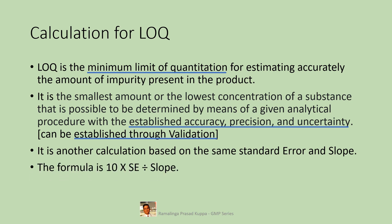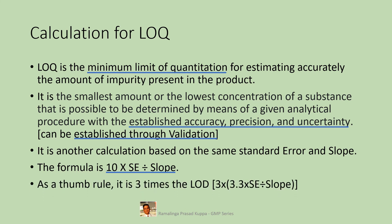The LOQ formula is 10 multiplied by the standard error divided by the slope — a similar extrapolated calculation to LOD. As a thumb rule, LOQ is 3 times the LOD. So if you represent LOQ with reference to LOD, LOQ = 3 × LOD. In the formula, 10 can be replaced with 3 × 3.3, multiplied by standard error divided by slope.